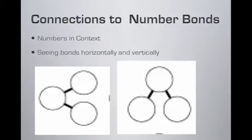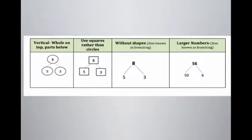Connections to our number bonds: as we work with number bonds in the primary grades, we see them both vertically and horizontally. Students may see number bonds with circles and squares going horizontally, but it's really helpful for them to see them vertically as well. As we move into branching, we basically just get rid of those shapes and now we have just the numbers listed — a nice building block.